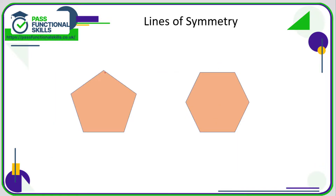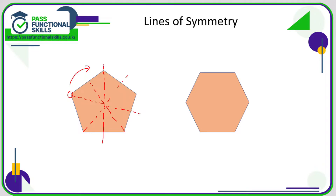For a regular pentagon, it has five lines of symmetry — one going down the middle, and others spaced equally around. If we imagine rotating it one fifth of the way around, each position gives an identical line of symmetry, giving us a third, fourth, and fifth. So for a regular shape, the number of lines of symmetry is the same as the number of sides — a pentagon has five sides and five lines of symmetry.